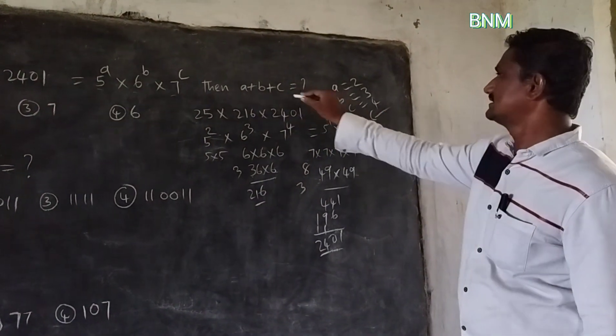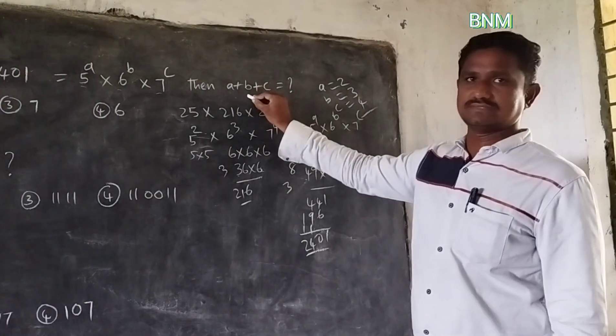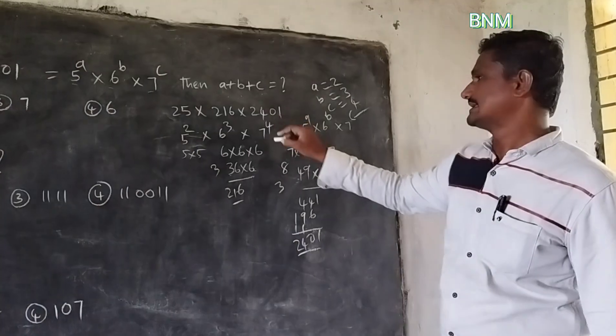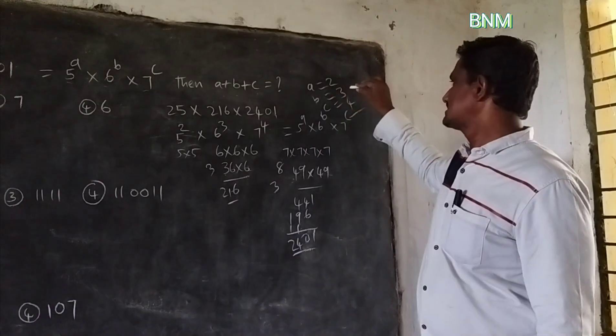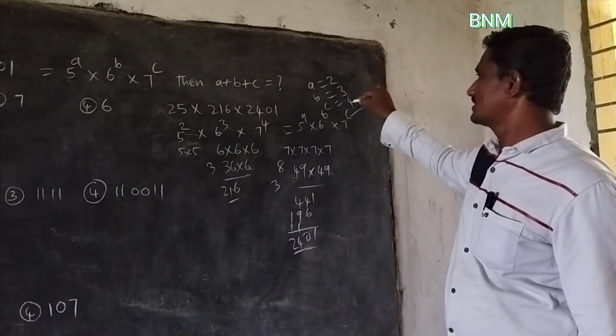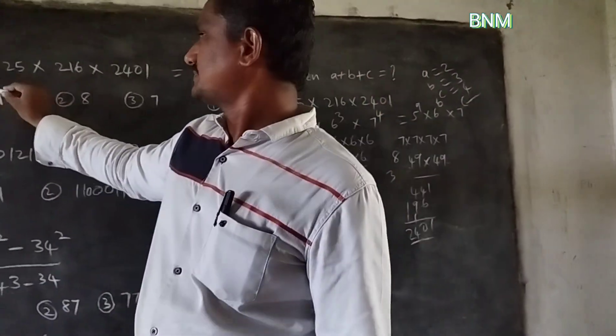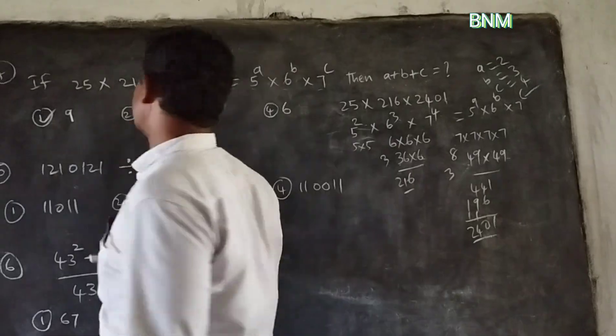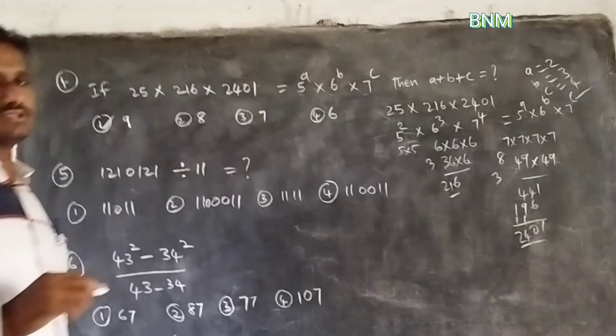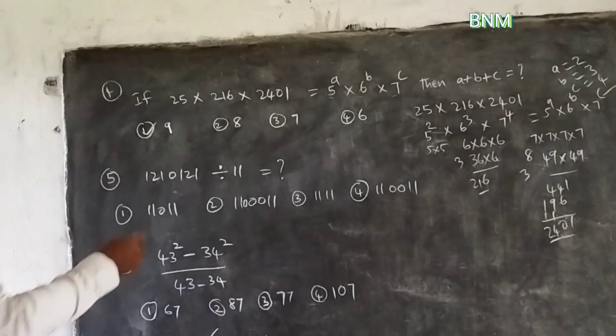So a plus b plus c equals 2 plus 3 plus 4 — that is 7 plus 2 equals 9. First option is the right answer. Be clear, students.